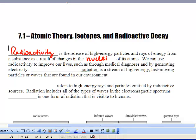We can use radioactivity to improve our lives, such as through medical diagnosis and by generating electricity. Natural background radiation is a stream of high-energy, fast-moving particles or waves that are found in our environment.